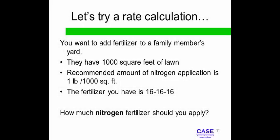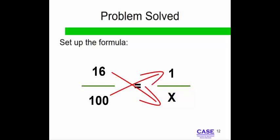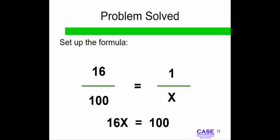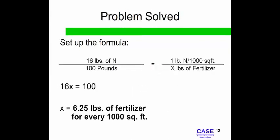Let's try a rate calculation example. If you want to apply a 16-16-16 formula fertilizer to a lawn at a rate of 1 pound per 1,000 square feet, how much total fertilizer will you need to spread over 1,000 square feet? Set up the formula: set 16 pounds of nitrogen over 100 pounds of fertilizer equal to 1 pound of nitrogen per 1,000 square feet, over x pounds of total fertilizer per 1,000 square feet. Cross multiply — the equation reads 16 times x equals 100. 100 divided by 16 equals 6.25 pounds of fertilizer applied per 1,000 square feet.